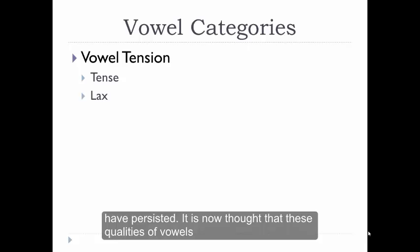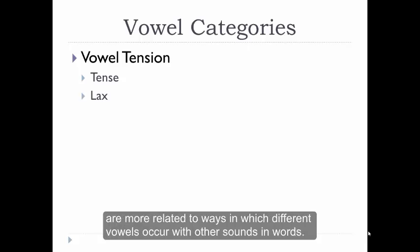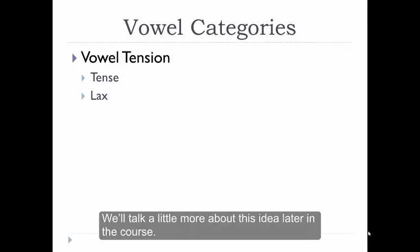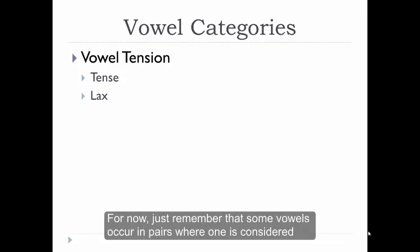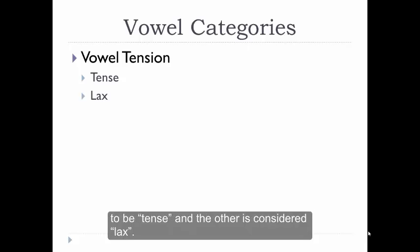It's now thought that these qualities of vowels are more related to ways in which different vowels occur with other sounds and words. We'll talk a little bit more about this idea later in the course. For now, just remember that some vowels occur in pairs where one is considered to be tense and the other is considered lax.